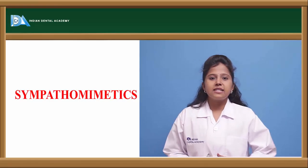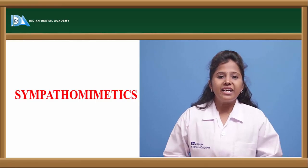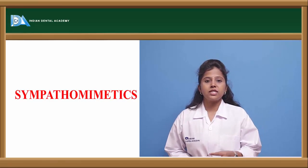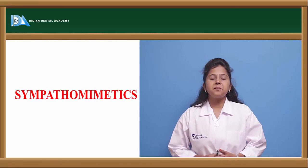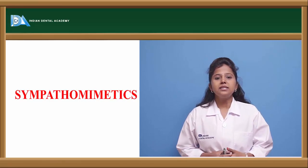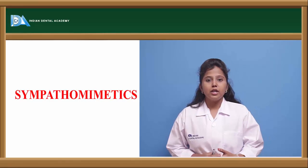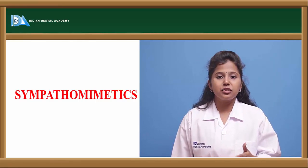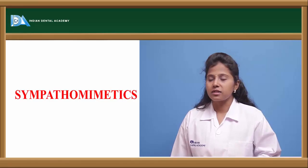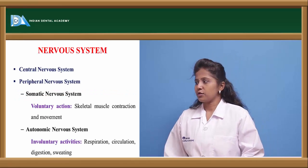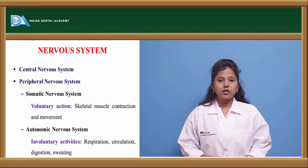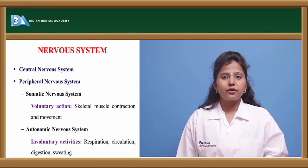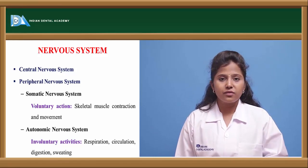In this lecture, we will discuss about the adrenergic system. One of the topics in the adrenergic system is sympathomimetics. What are the sympathomimetics? These are the drugs which mimic the action of the sympathetic nervous system. Before entering into the actual topic of sympathomimetics, let us see a brief outline of the nervous system.